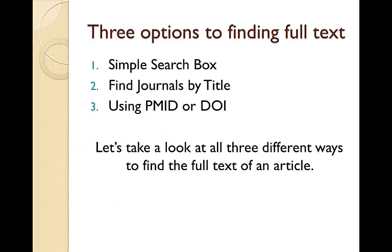We have three options to finding full text from a citation. We can use the simple search box, find the journal by title, or we can use the PubMed ID number or DOI if we have that. Let's take a look at all three different ways.